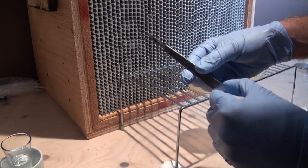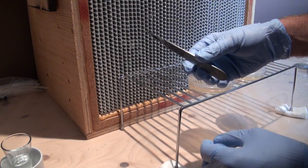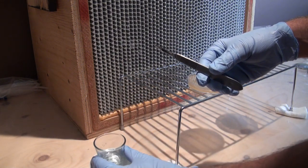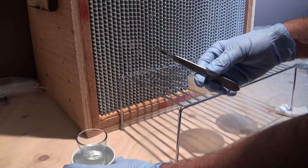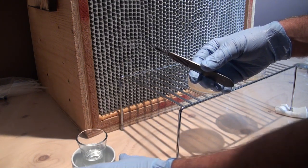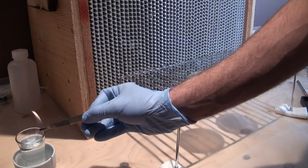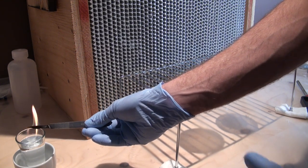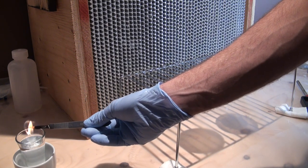To flame sterilize, you can use an alcohol burning lamp. Or if you don't have one of those, you could put some alcohol in a shot glass, just make sure you put it in a cup so the alcohol can't fall over. You want to flame sterilize your scalpel until it's red hot, and do this between every single transfer.